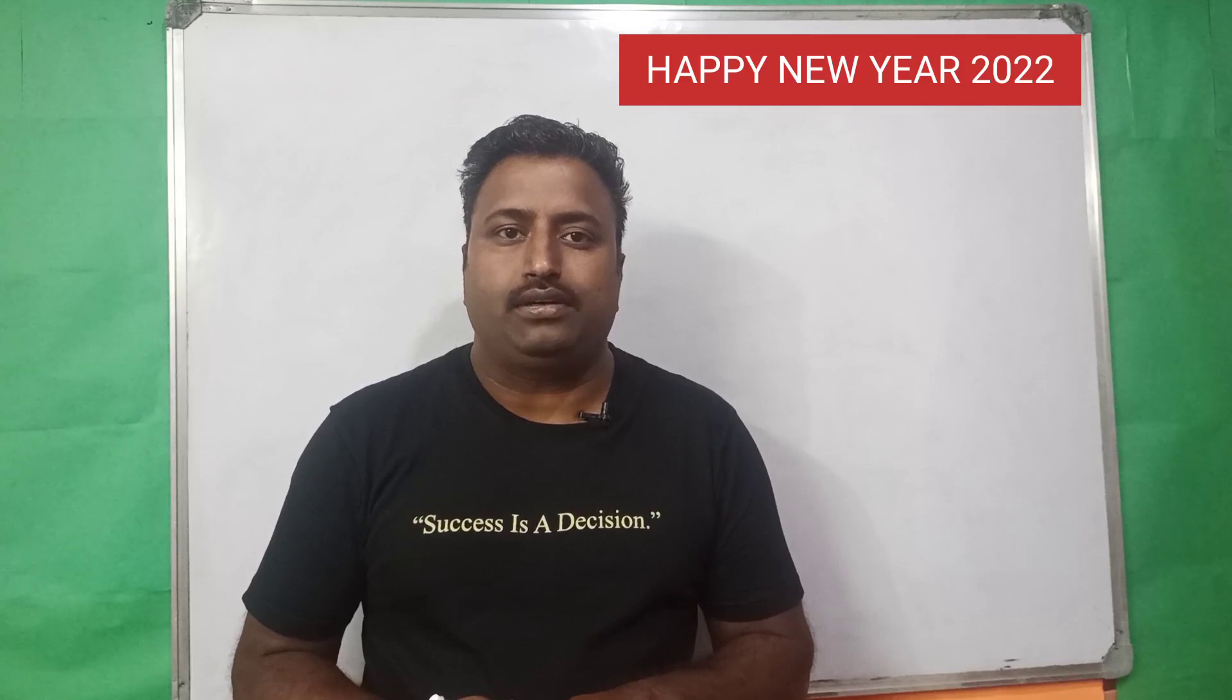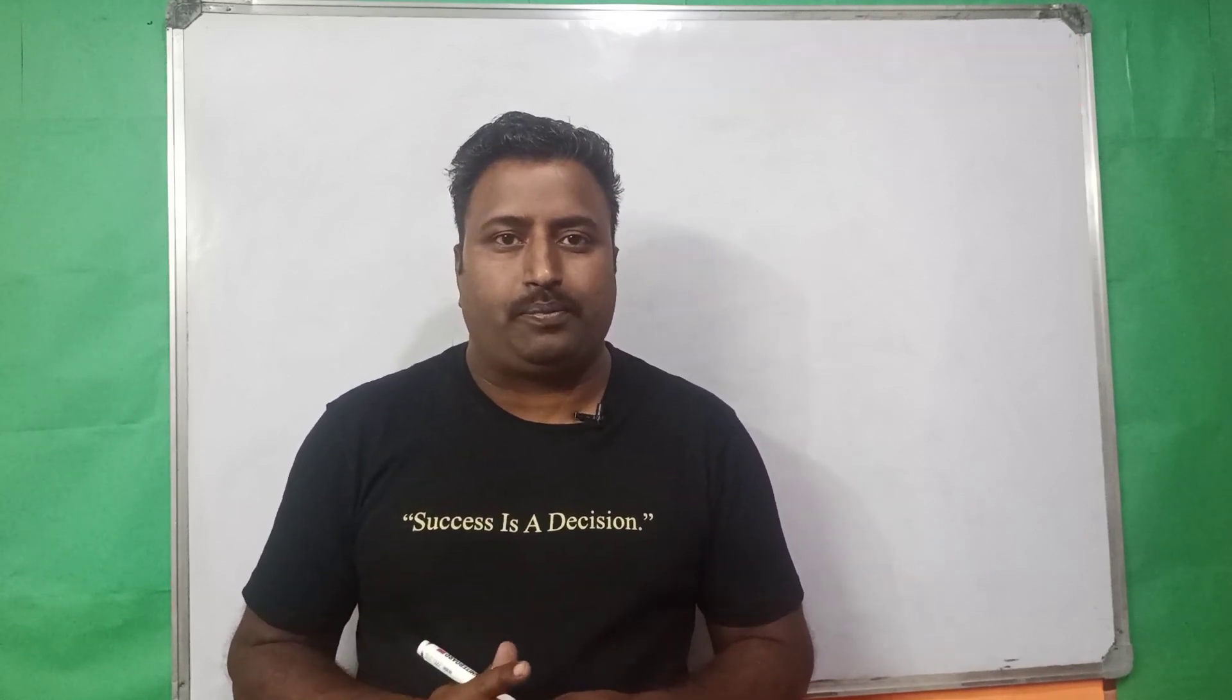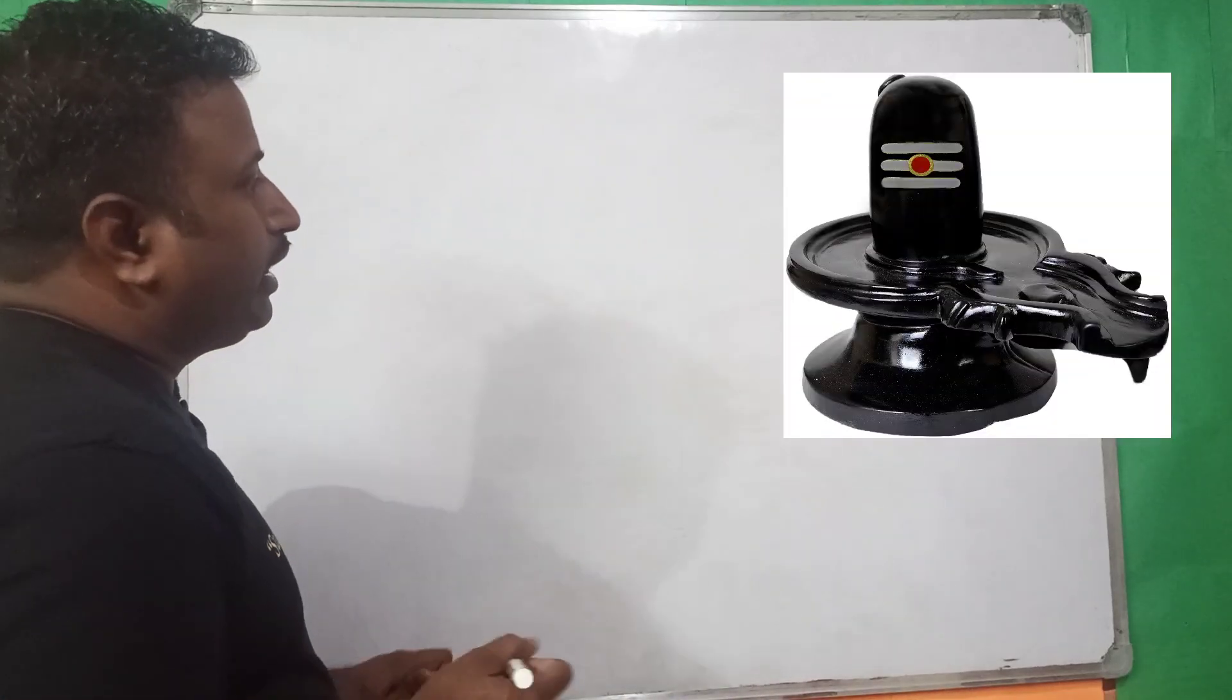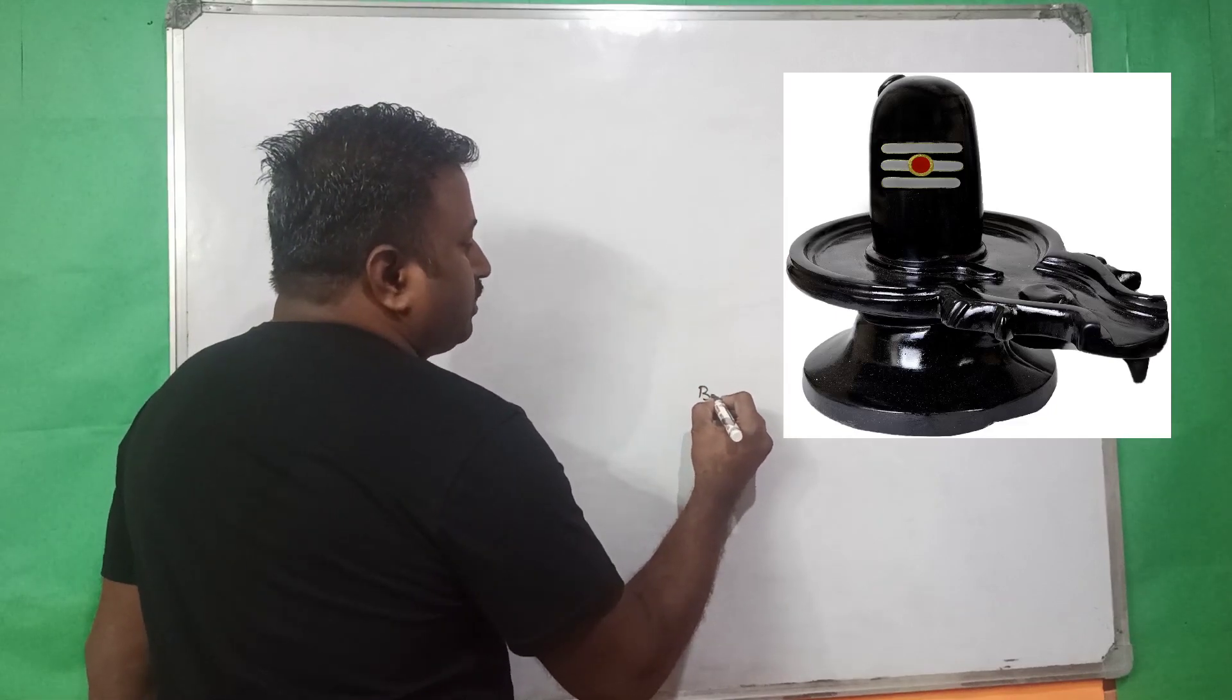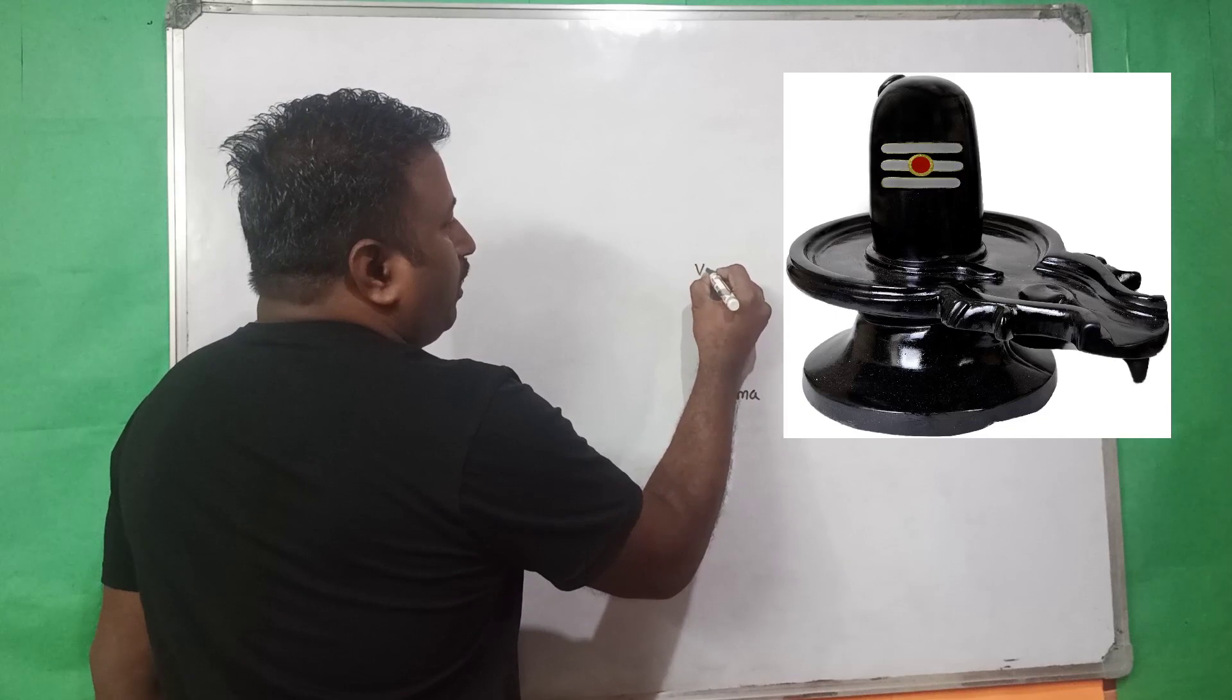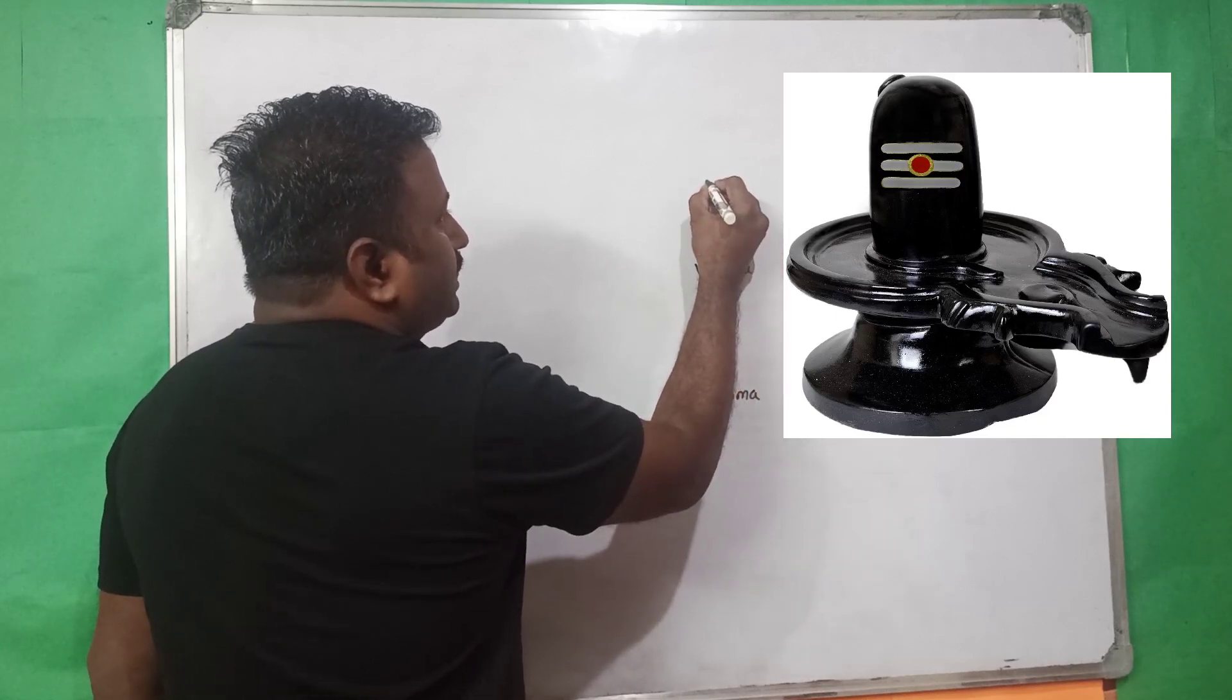Now let's start our session. Is Shivalingam represents atom or not? First of all, look at the structure of Shivalingam. It basically has three parts. The lower part we call it as Brahma, the middle part we call it as Vishnu, and the upper part we call it as Shiva.